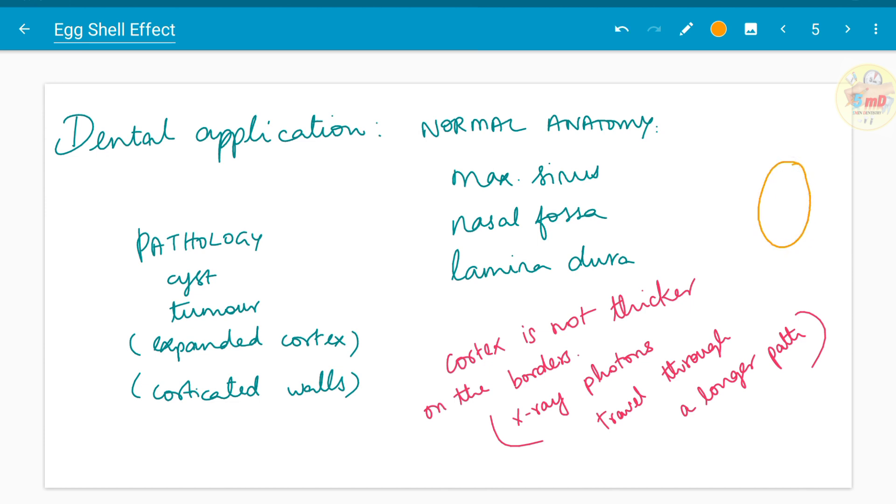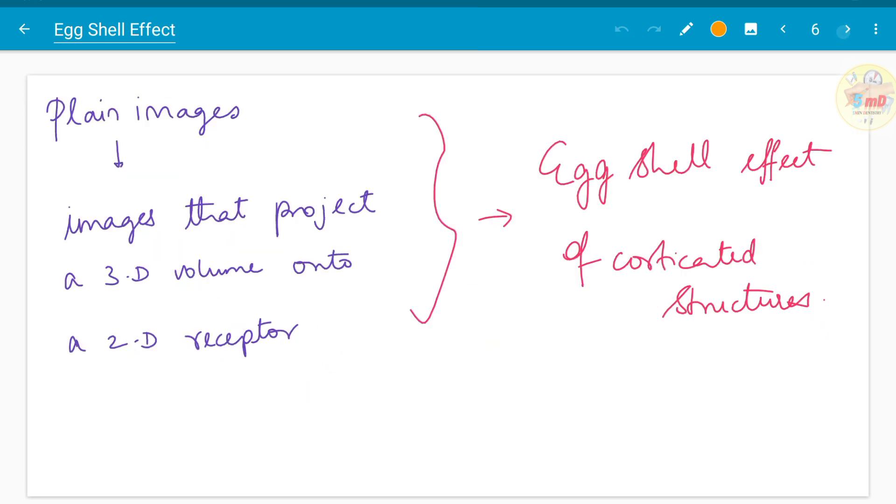It is seen in plain images. That is, what are plain images? Images that project a 3D volume onto a 2D receptor. Eggshell effect is seen in the corticated structures of those images.